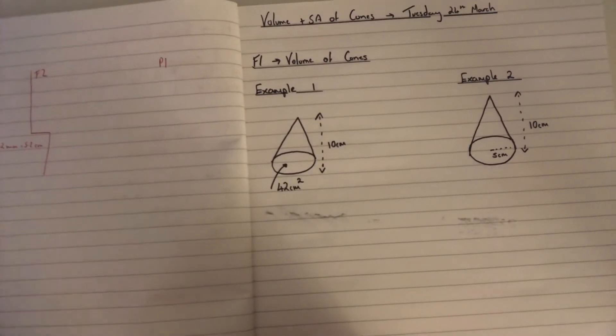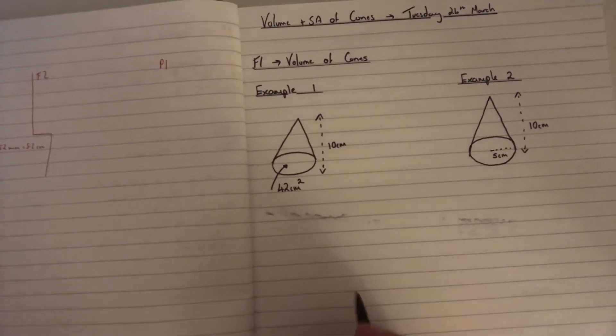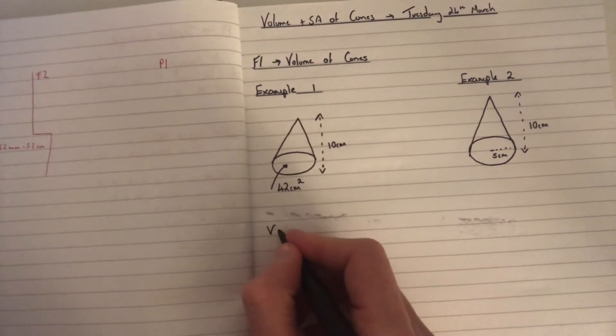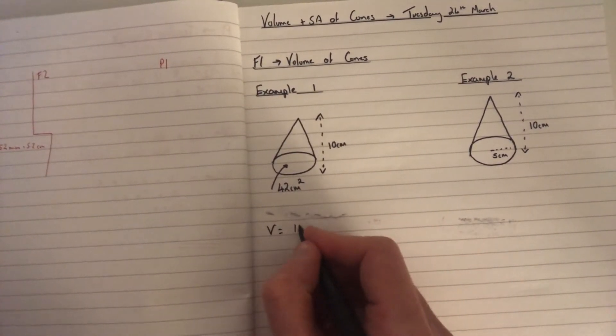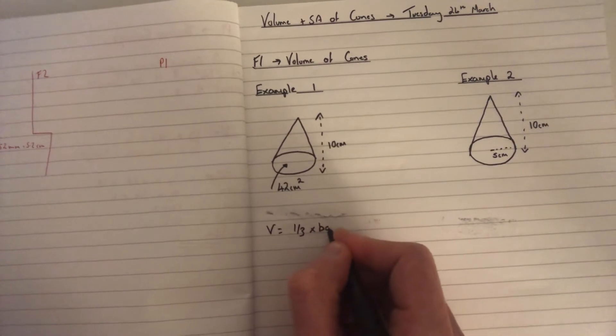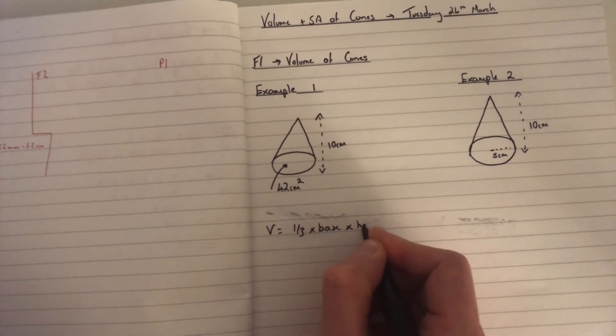Right, so now we're going to move on to volume of cones. The formula is the same as in a pyramid, so volume is equal to a third times by the base area times by the height.